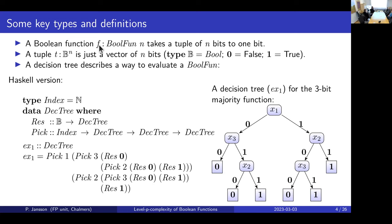A boolean function takes n bits to one bit. A decision tree is either a leaf — which stores the result, for the case when the function is already decided — or you pick an index in the tuple, and then you have two decision trees, one for if that index is zero and one for if it's one. This is a syntactic representation of the three-bit majority function as a decision tree.